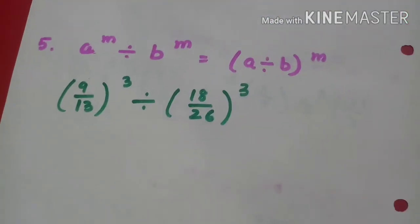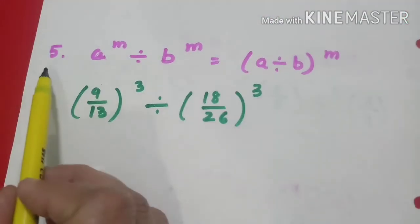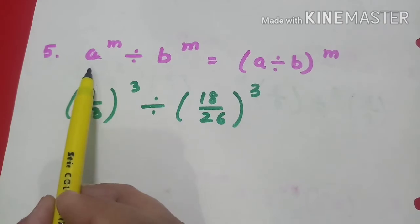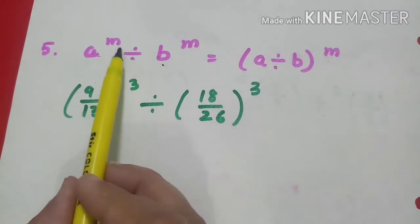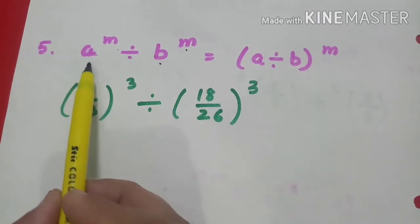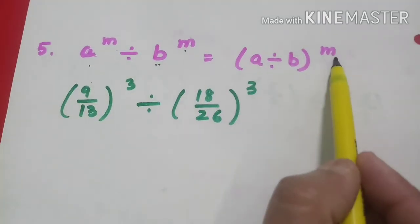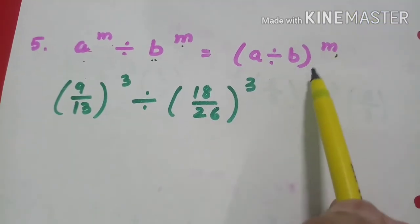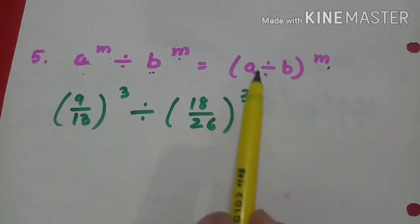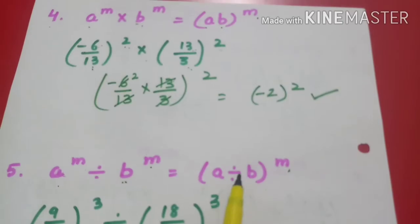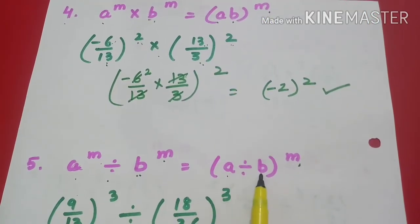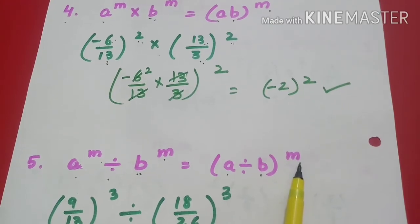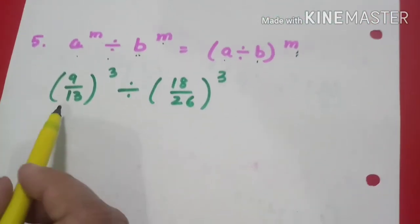Now let's see the fifth law. What does it say? If I have to divide two numbers with different bases and the same power, then bases will get divided with the same power. Just like in multiplication, bases were multiplied with the same power, in division bases get divided with the same power. Let's see one example.